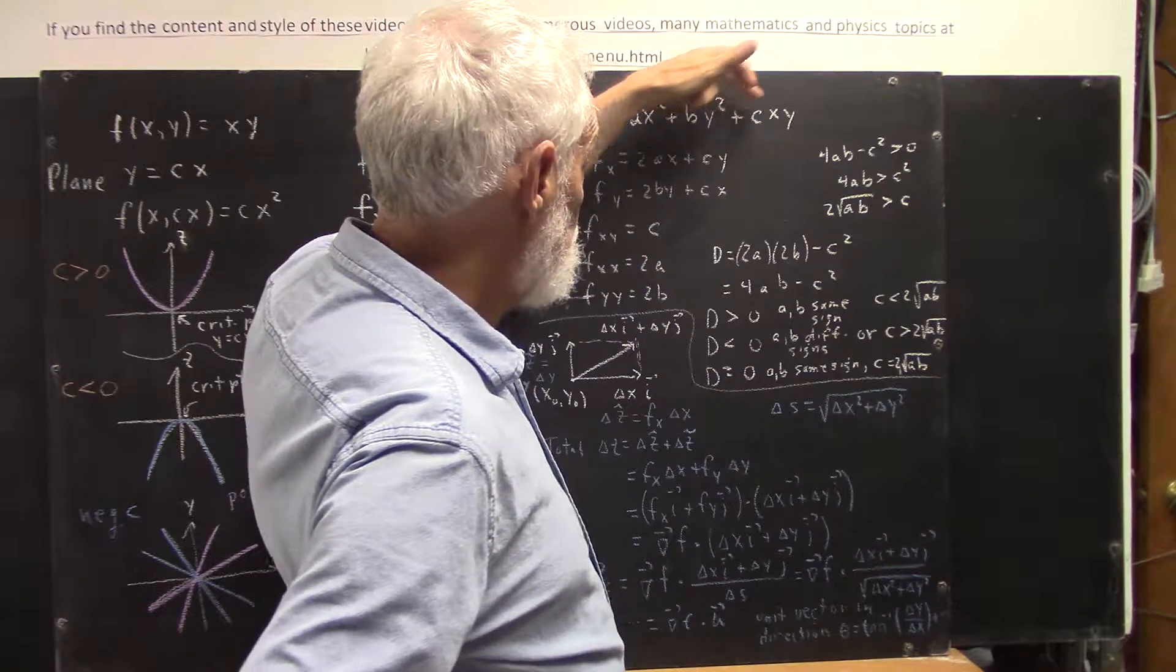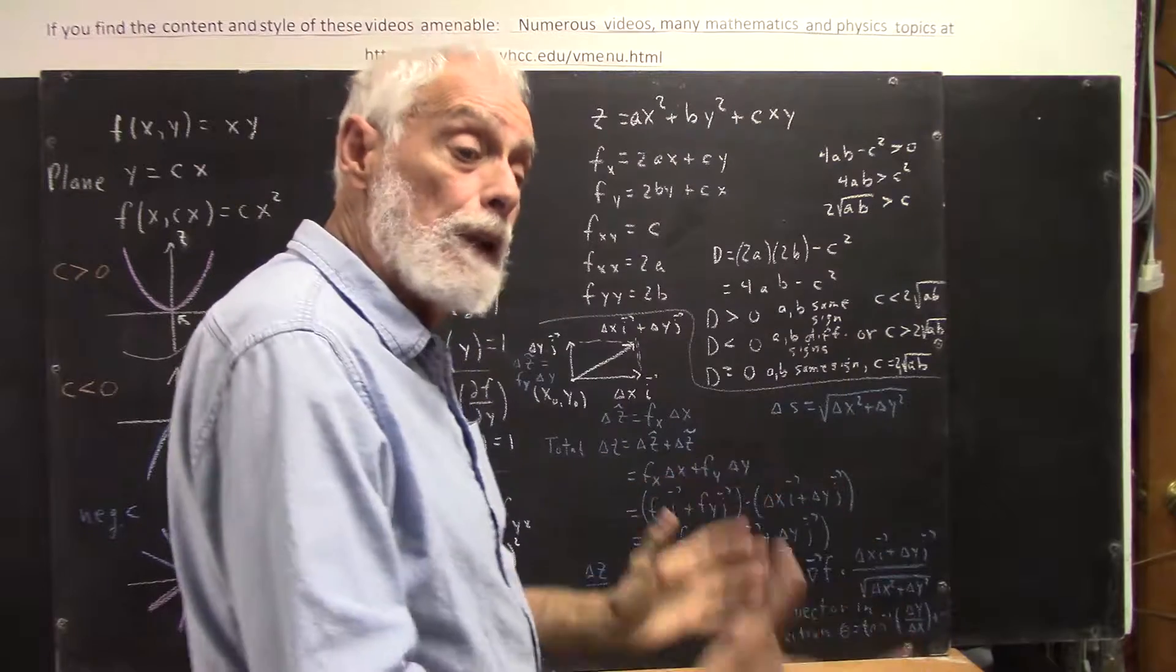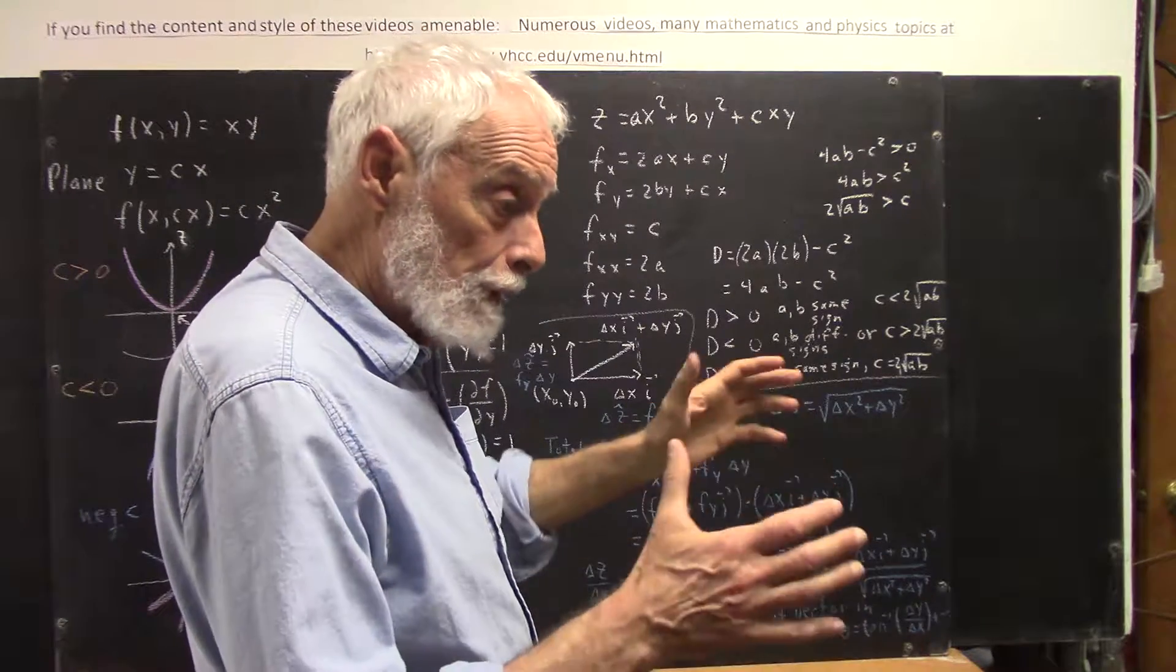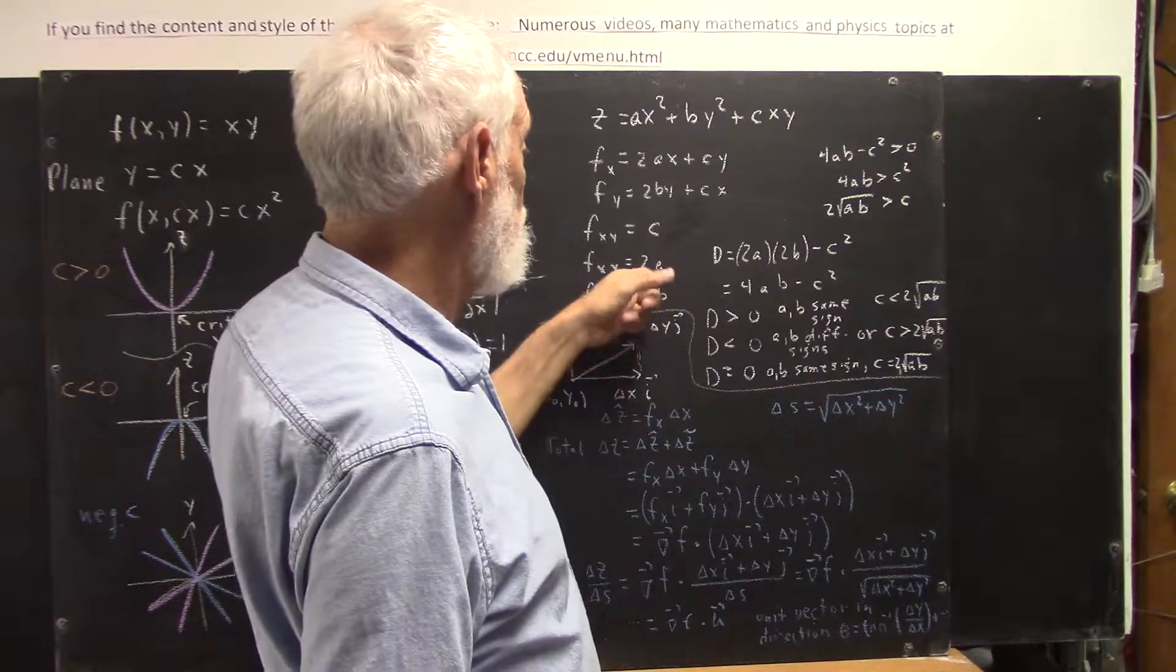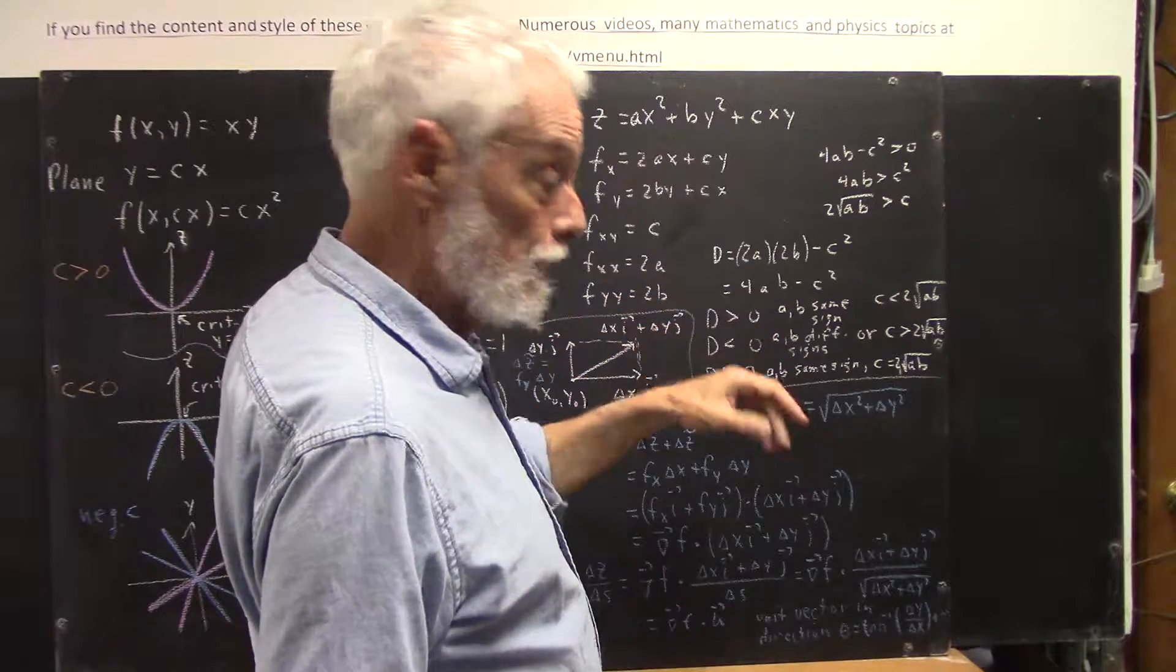And the xy partial is not going to be big enough to mess it up. So you're either going to have a max or a min, depending on whether the a and b are negative or positive.